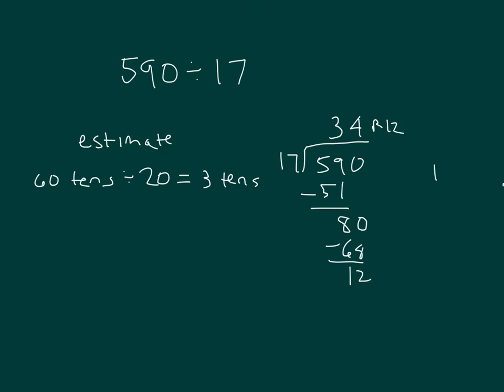For our check, we multiply 17 times 34, and then we'll add in the 12. 4 times 17 is 68, place a 0. 3 times 7 is 21, regroup a 2. 3 times 1 is 3, plus 2 is 5, and we can add those together. And don't forget to add in the remainder to see that the problem actually does check.